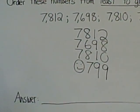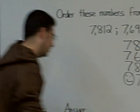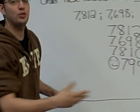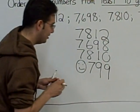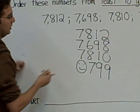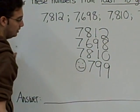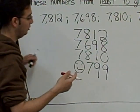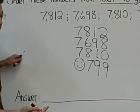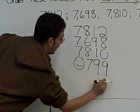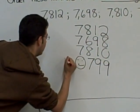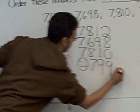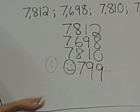We have all our numbers stacked on top of one another and we're going to compare them from left to right. Let's start with what's different. Which number is different? Zero. Smaller or larger? Smaller. So that means that this entire number is the smallest. We're going to give that a 1 and put one line through it. We're left with three numbers.